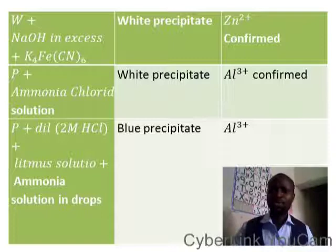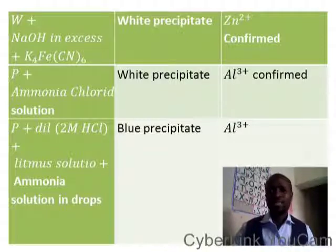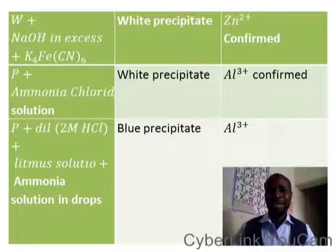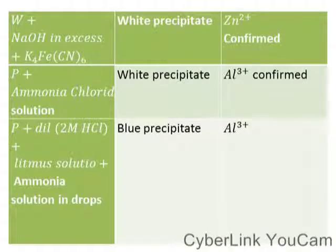P plus ammonium chloride solution — you have a white precipitate, then aluminium ion is confirmed. Now P plus dilute 2 molar HCl plus litmus solution plus ammonia solution in drops — you have a blue precipitate, and that confirms aluminium ion.